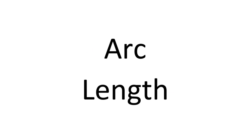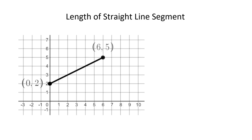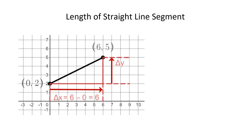Now on to our main question: how to find the arc length of a curve. We start with a simple curve with a length that is easy to find — a straight line segment. We form a right triangle with the given segment as its hypotenuse. The vertical and horizontal sides are the legs of the right triangle. The change in x from one end of the segment to the other is delta x. In this example, delta x is 6. The change in y from one end of the segment to the other is delta y. In this example, delta y is 3.